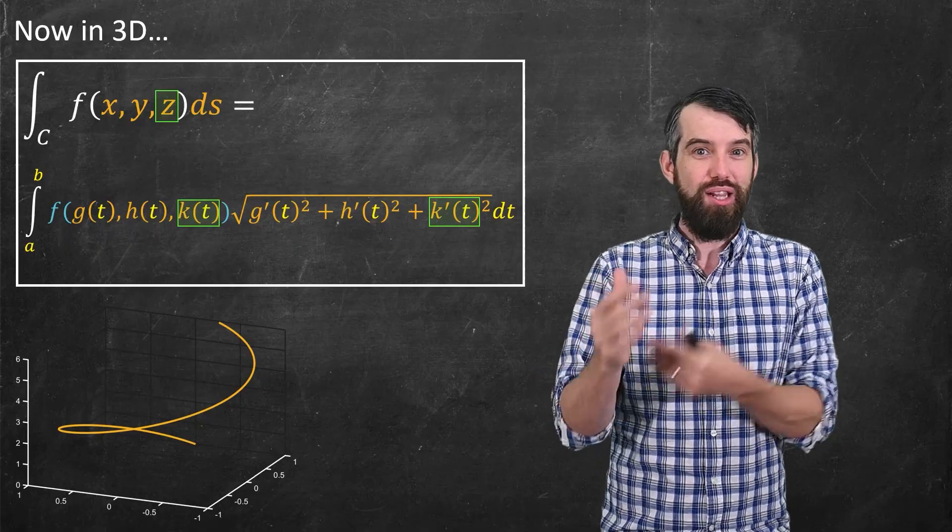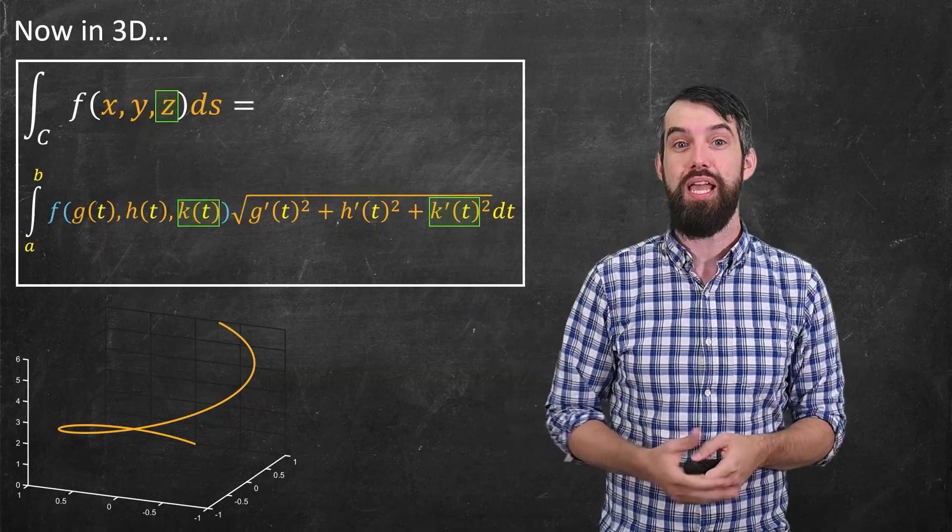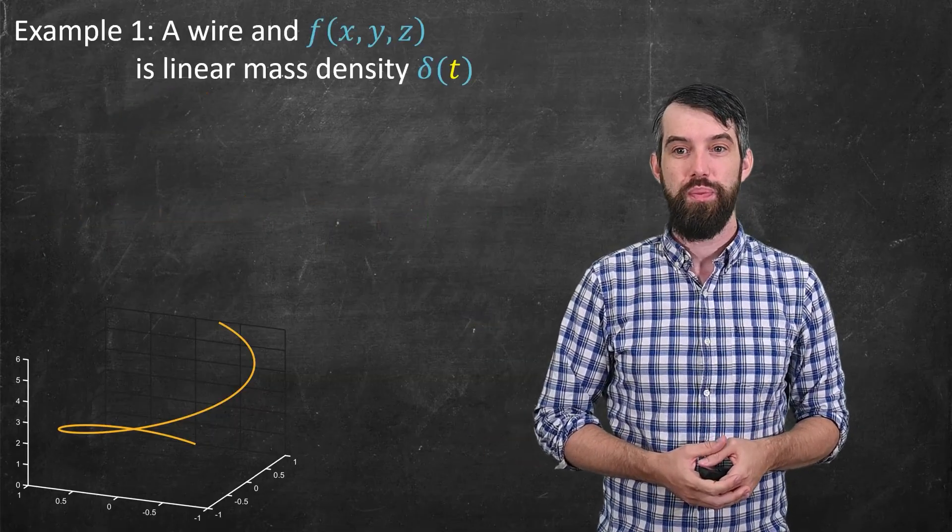Okay, so it clearly doesn't represent the surface area like it did in 2D, but what might this line integral represent? Well, there are several different things it could do. First, imagine that this line is a wire.